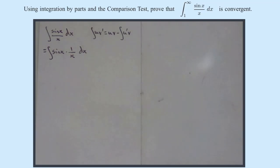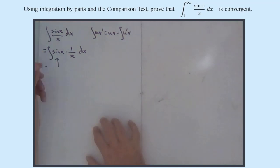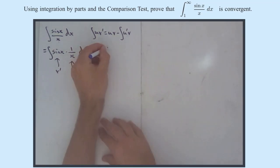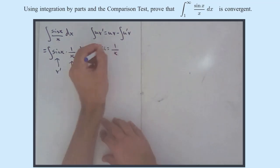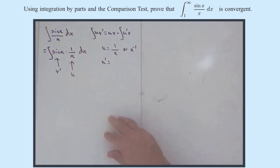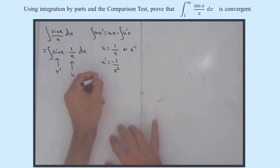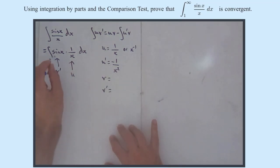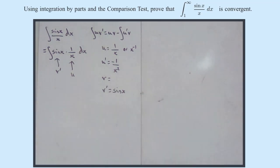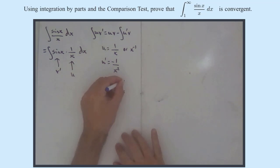Going back to what I said earlier about the comparison test: the −1/x² looks much more useful, because that looks like it might lead to a convergent p-series. Remember, a p-series is the integral between 1 and infinity of 1/x^p, and if p > 1 we can show things are convergent. So I'm going to pick sin(x) as the thing to integrate — that's our v' — and 1/x as the thing to differentiate — that's our u. So: u = 1/x, u' = −1/x², v' = sin(x), and v = −cos(x).